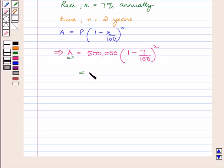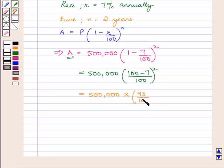This will be equal to 500,000 into 100 minus 7 upon 100 raised to power 2 which is equal to 500,000 into 93 upon 100 raised to power 2 which can be written as 500,000 into 93 upon 100 into 93 upon 100.